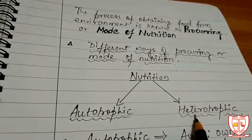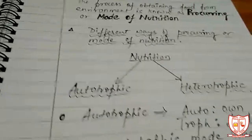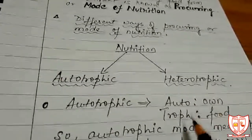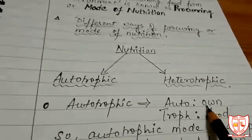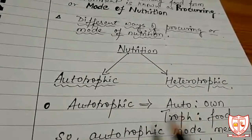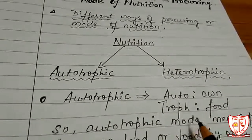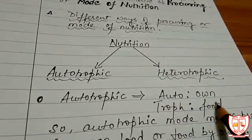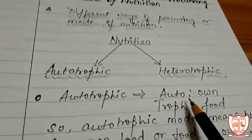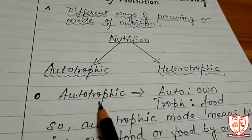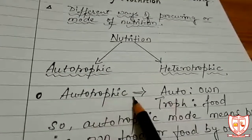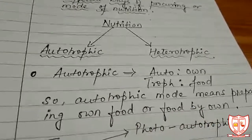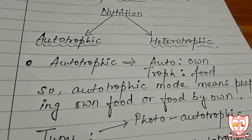Autotrophic — here 'auto' means own and 'troph' means food. So autotrophic actually means the mode of nutrition where the organism prepares its own food. The meaning is given in the name itself: if you know the meaning of the term, you know the definition. So autotrophic means the organism which prepares its own food — that is, it can provide food to itself.